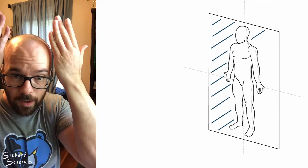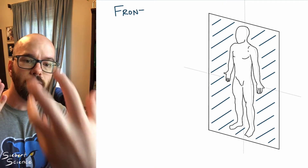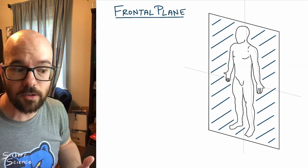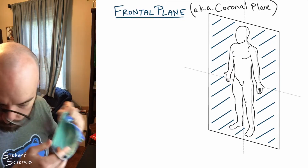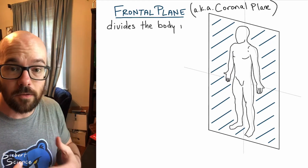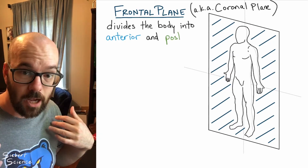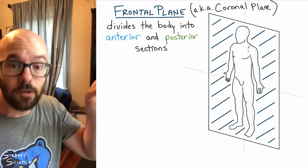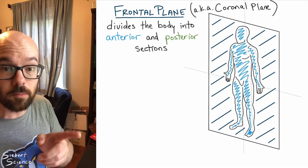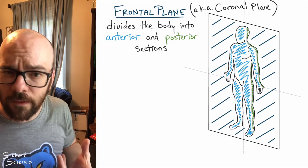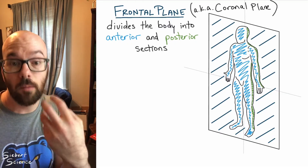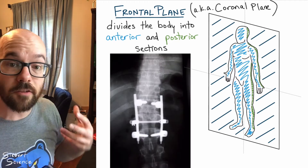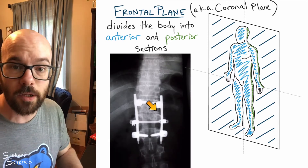The first plane is called the frontal plane. We divide the body like this and look from the front at the cross-section. This plane is also known as the coronal plane. It divides the body into an anterior and a posterior half — the anterior half in blue and the posterior half in green. When you look at this, it looks like an outline of the human body as if you were looking from the front. Here's an example: this is a frontal X-ray showing somebody's spinal fusion.